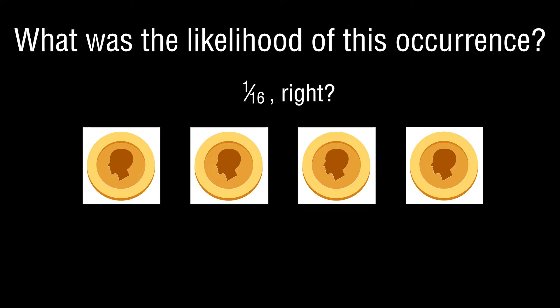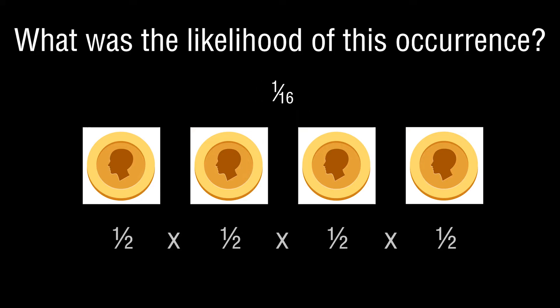We'll shortly discuss why that might not have been the case, but if you did assume one in sixteen, how did you come up with that answer? The likely way is you said: there's a 50% chance of heads on the first toss, a 50% chance on the second, the third, and the fourth — so let's multiply these probabilities together.